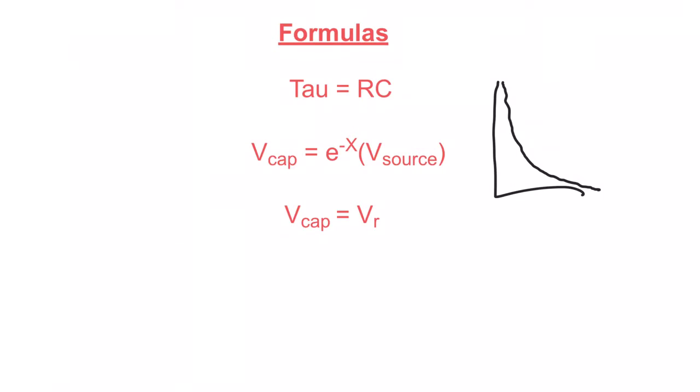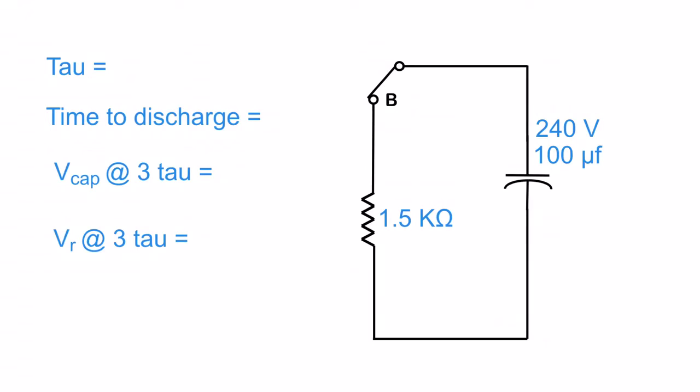So let's start seeing what happens when we plug these numbers into the circuit. First off, let's figure out what our tau is. So all we have to do is go 1.5 kiloohms times 100 microfarads. That's 100 times 10 to the negative sixth. And that gives us our tau, which works out to be 150 milliseconds. Then to figure out our time to discharge, all we have to do is take this number and multiply it by 5, which works out to be 750 milliseconds.